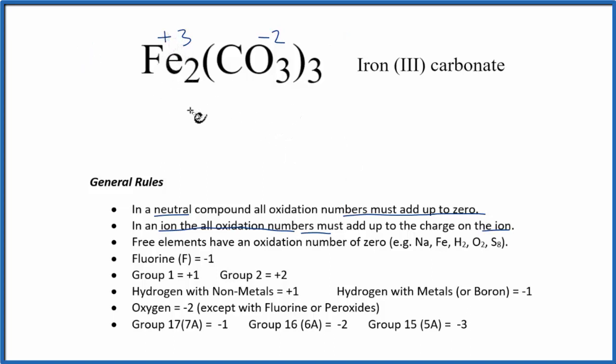We could also do this algebraically if we didn't know the iron. We could say iron is x, and we have two of them, plus we have the minus 2 for the carbonate, and we have three of those. So all that has to equal zero.